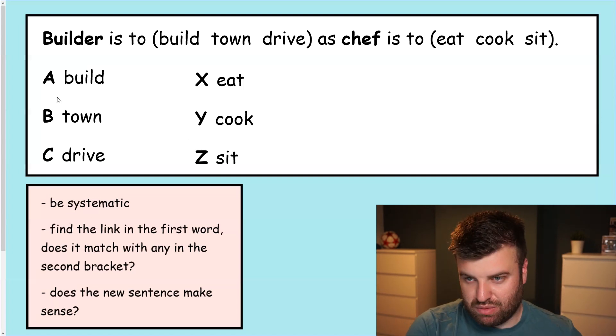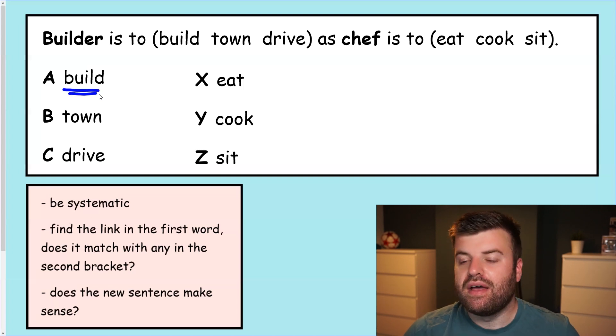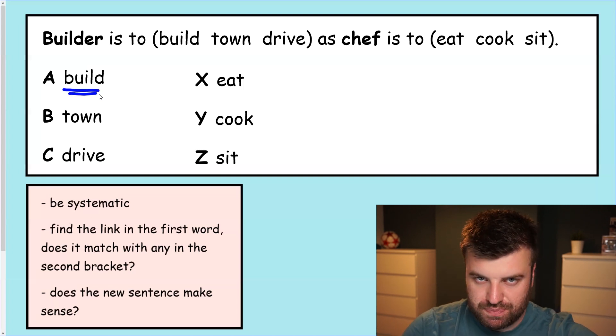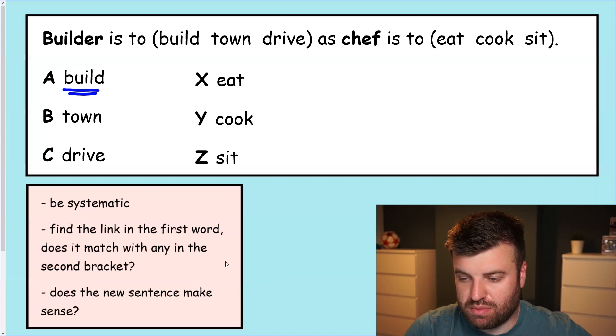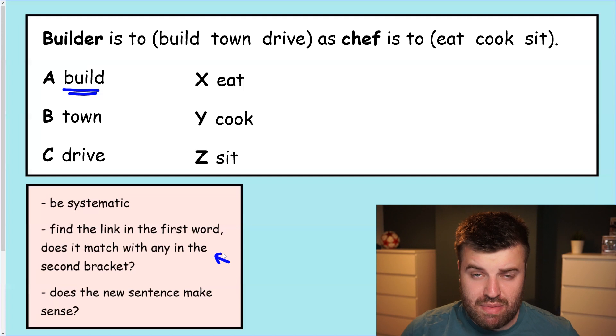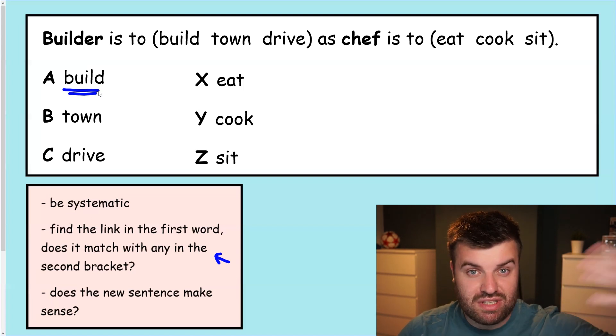We're going to start with build because that's the first word in the first bracket. So builder is to build. This is where the second bit of information comes in at the bottom. Find the link in the first word. Does it match with any in the second? What do we mean by that? Well the best way is to just show you. So if builder is to build, what's that link between these two words? Well there is a link there. A builder builds. That's what a builder does as part of the job.